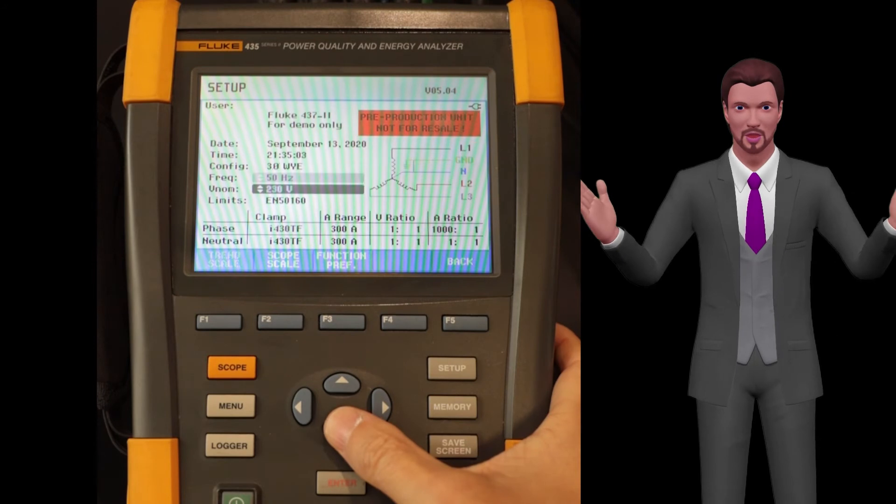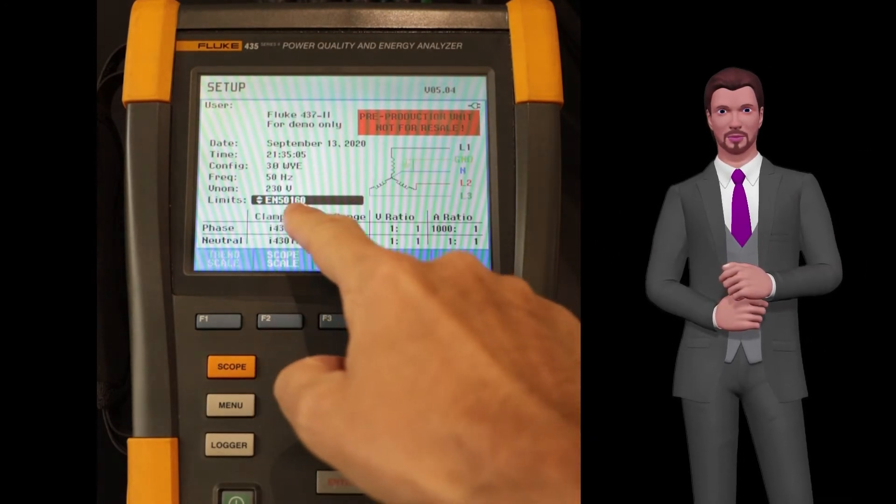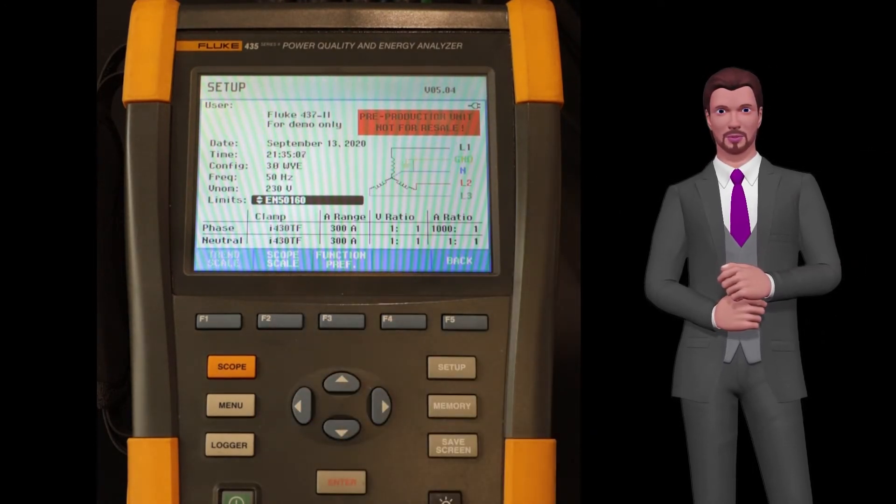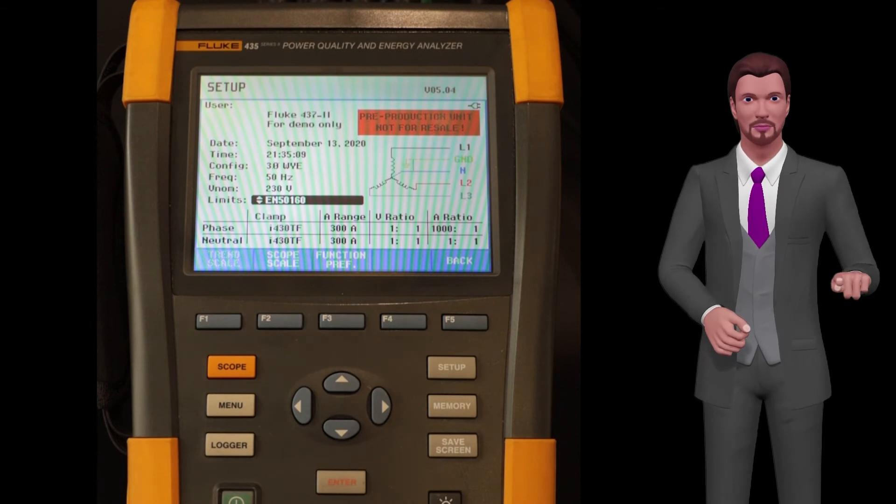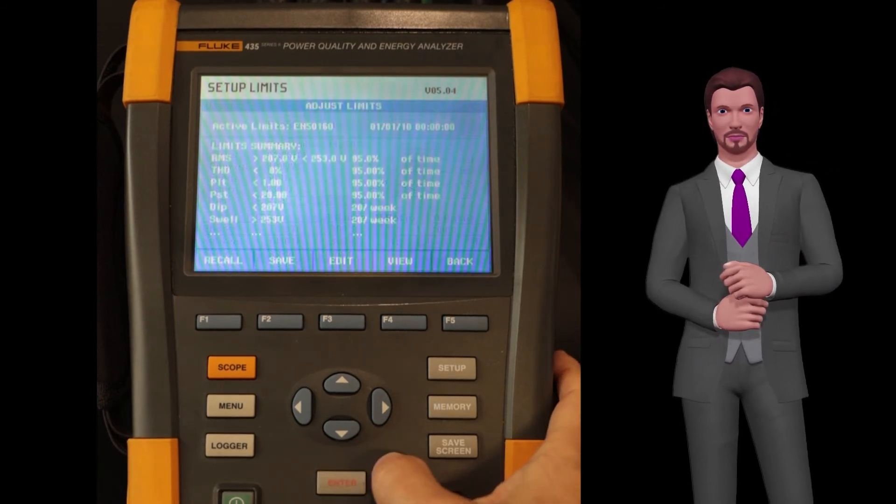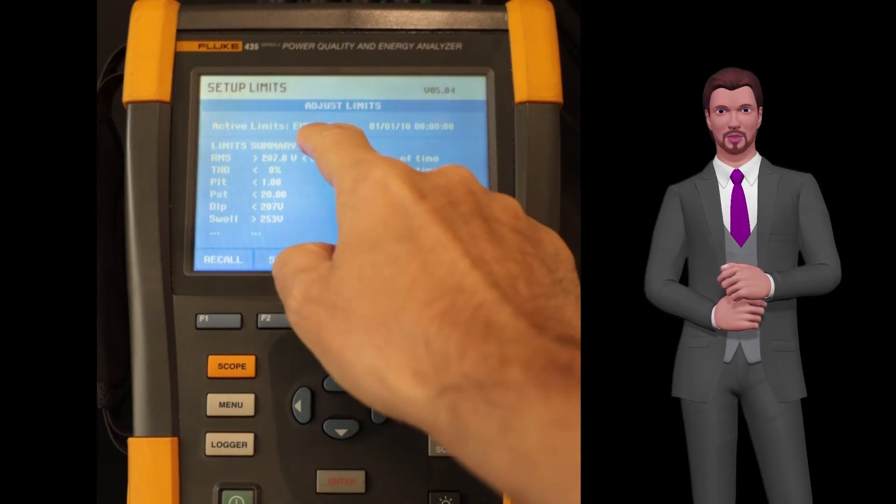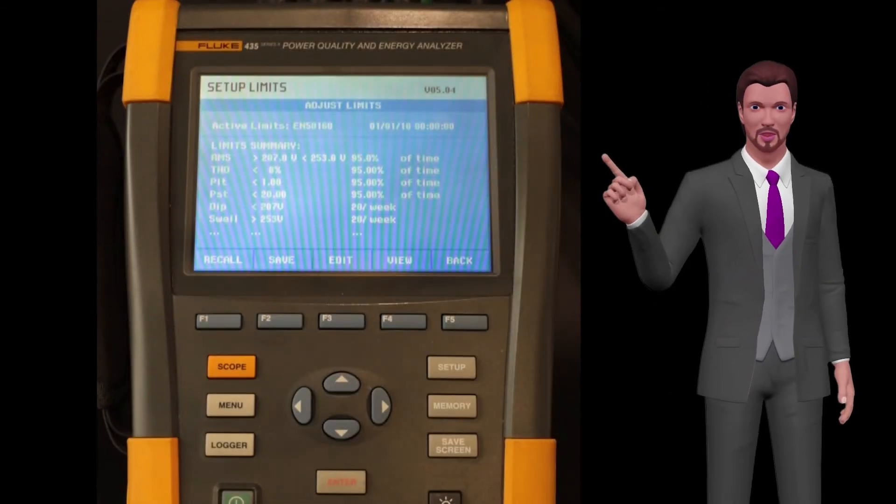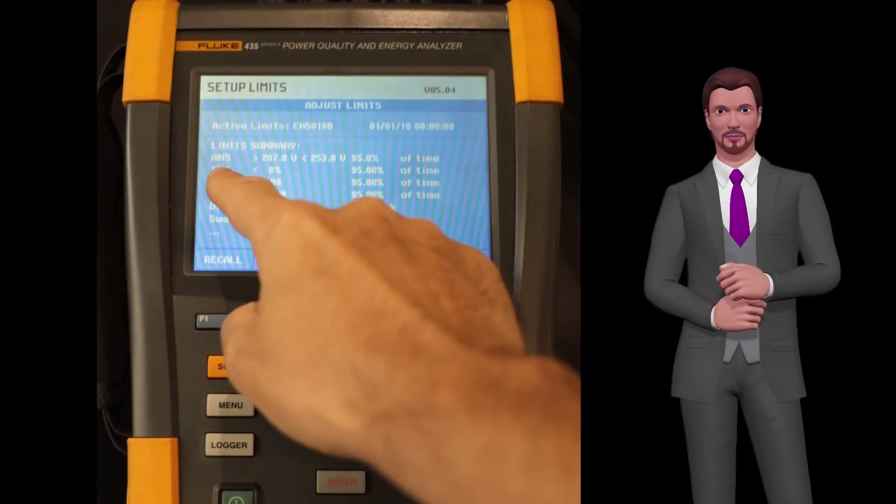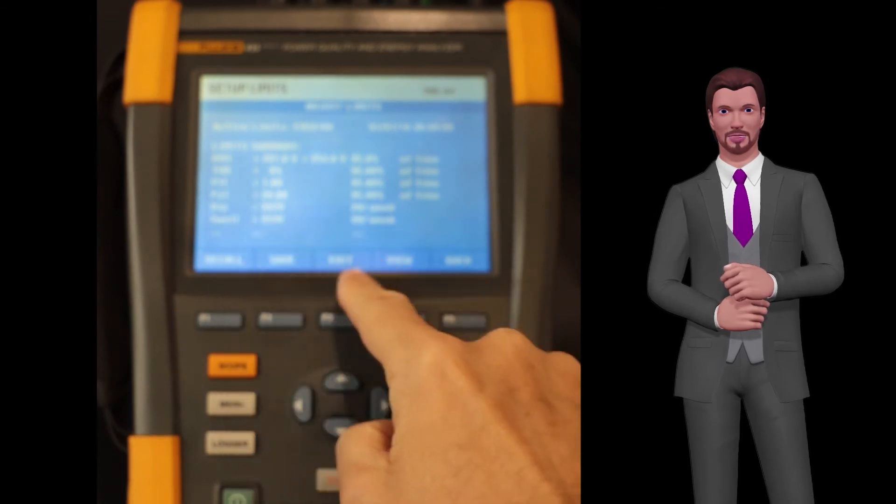Now that we have correctly configured the value of the nominal voltage, it is time to configure the standard that we are going to use for our power quality analyzer. Press the down arrow to the option called limits, and press the enter key. By default, the limits established by the European standard EN 5160 for power quality limits will appear.